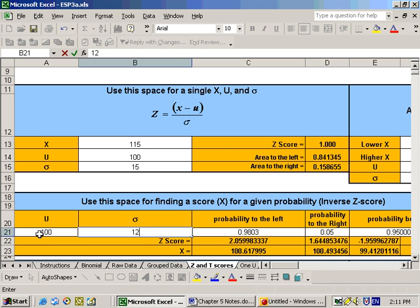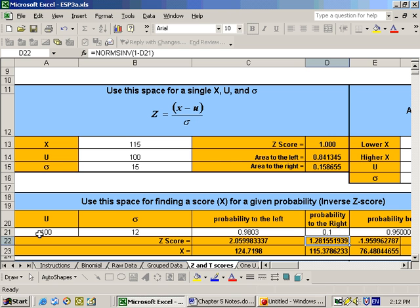And we want the area to the right, since we're in the top 10%, to be 0.10. And we get this for the Z-score. But in other words, our utility bill would have to be at least this much, $115.38, rounded to the nearest penny.